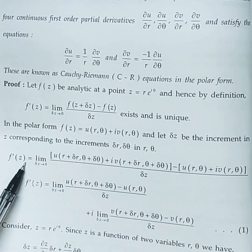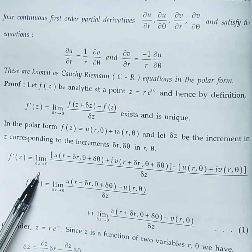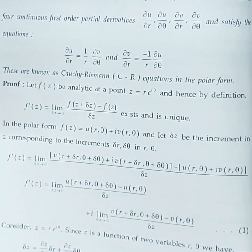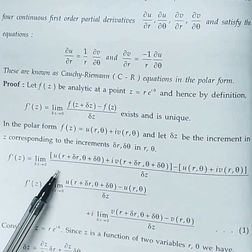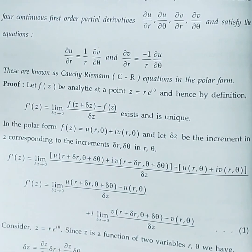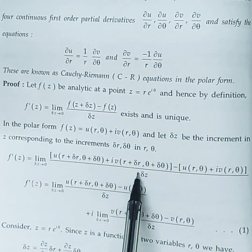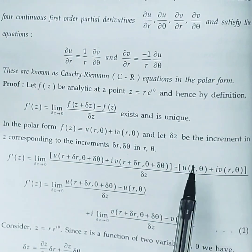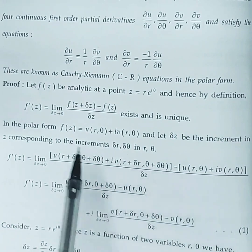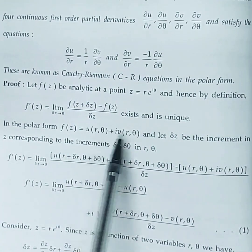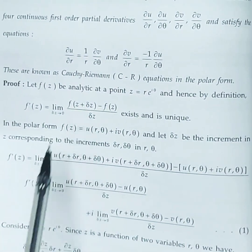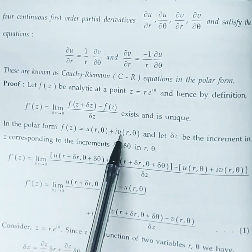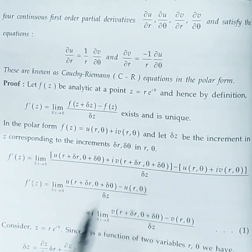f'(z) equals the limit as Δz → 0. Since f is a combination of u and v, we rewrite f in terms of u and v: [u(r + Δr, θ + Δθ) + i·v(r + Δr, θ + Δθ) − u(r, θ) − i·v(r, θ)] / Δz. Here, f(z + Δz) gives r + Δr and θ + Δθ, while f(z) is substituted as is, with Δz in the denominator.